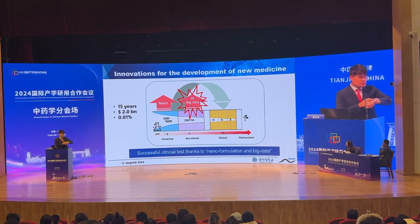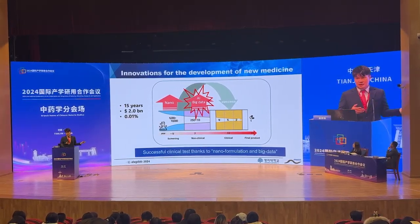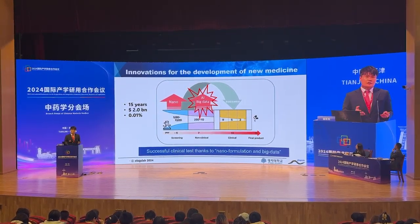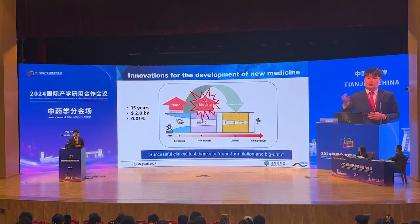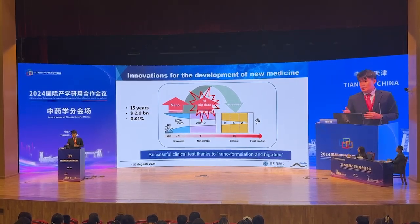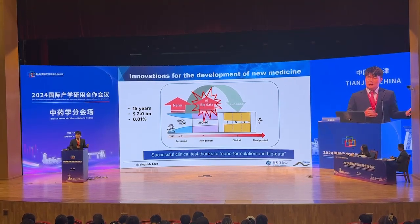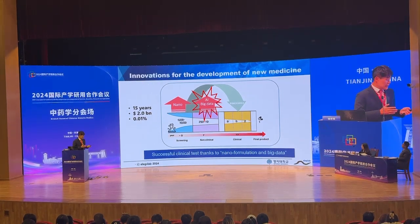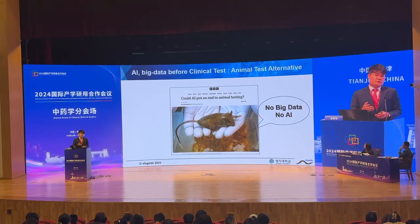Let's move on to the second issue of innovation in drug discovery and development: big data and AI. Cell culture systems can generate big data because there are many cells in your culture vessels. But in vivo — mouse, rabbit, or beagle — it's not possible to generate big data. And without big data, there's no AI, no artificial intelligence.